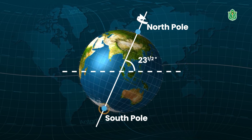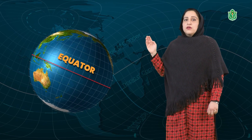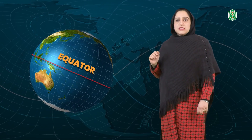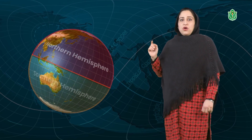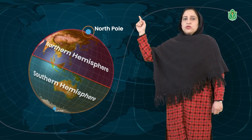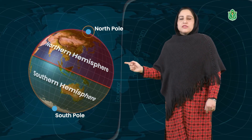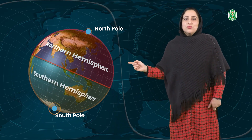Another important line on the surface of the earth is the equator. This line is exactly halfway on the surface of the earth. That means it divides the earth into two equal parts or hemispheres — that is the northern hemisphere and the southern hemisphere. The top of the northern hemisphere is the north pole and the extreme end of the southern hemisphere is the south pole.